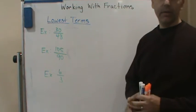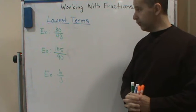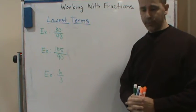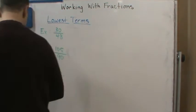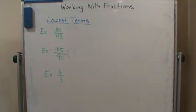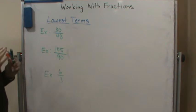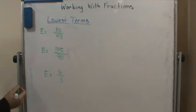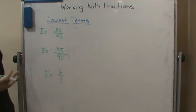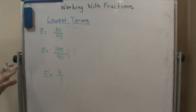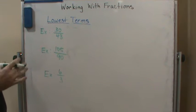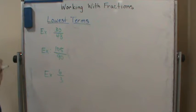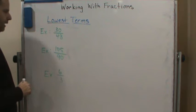Welcome back. We're going to do some more examples of putting fractions in the lowest terms. I'm going to show you a couple of ways of looking at these. I'm going to start with finding the greatest common factor — the largest number that will divide the top and the bottom. That's what we want to look for. Sometimes it's not easy to find that number, but we want to try.